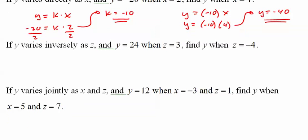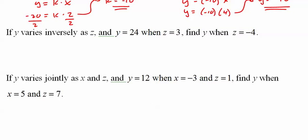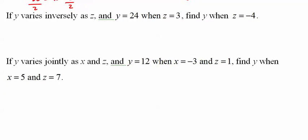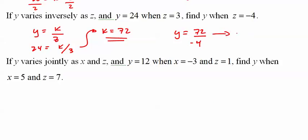We've got a couple problems here. We can say Y varies inversely as Z. So, we write it as Y equals K over Z. Figure it out from there. 24 equals K over 3. K equals 72. So, what does Y equal when Z equals negative 4? 72 over negative 4. Y equals negative 18.